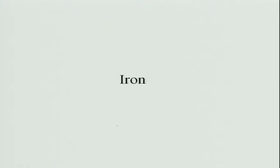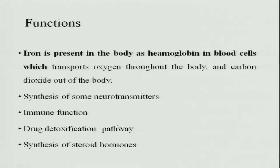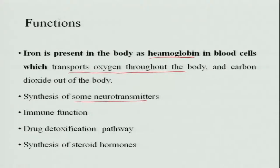The next important mineral is iron. Iron plays a very important role as a part of hemoglobin in blood cells. Hemoglobin is a combination of heme (the iron part) and globin (the protein part), and it transports oxygen throughout the body while removing carbon dioxide. Every gram of hemoglobin carries about 1.34 ml of oxygen. A normal hemoglobin level is about 12 to 14 grams per 100 ml for women and 14 to 18 for men. Iron is also involved in the synthesis of some neurotransmitters like ACh, immune function, drug detoxification pathways, and synthesis of steroid hormones.